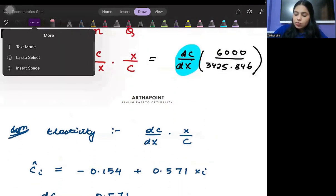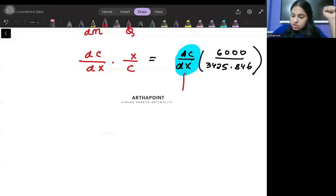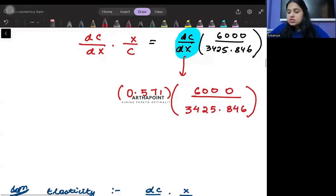Here then therefore, I can go ahead and I can plug 0.571 instead of DC by DX. So, here I will have 0.571 into 6,000 by 3425.846. And when you will be solving this, you will get the answer approximately as 1.000 something.